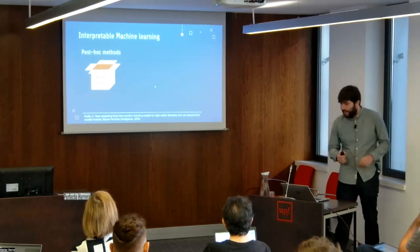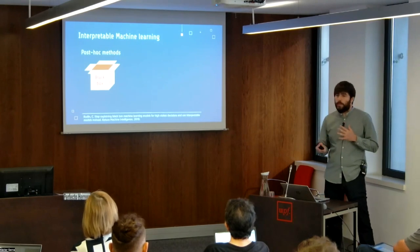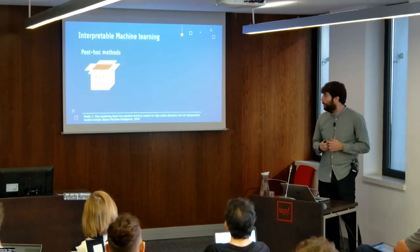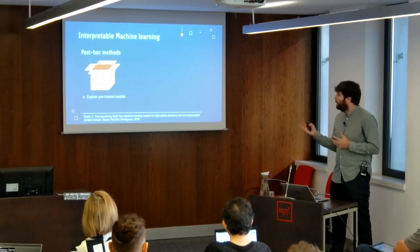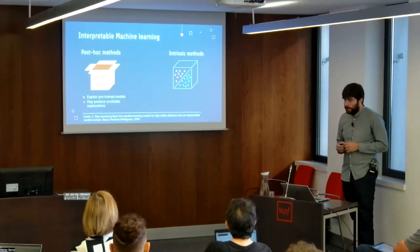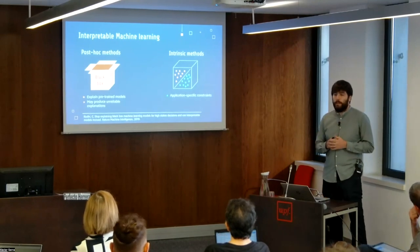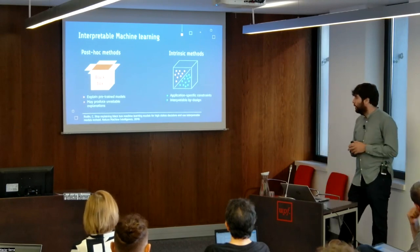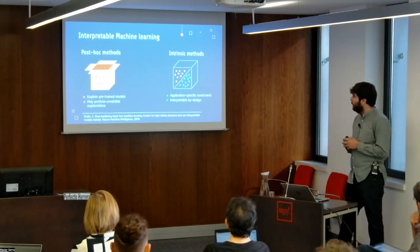Most interpretable methods are focused on explaining how the data is processed or represented by the network. This is known as a post-hoc explanation, as it tends to explain a pre-trained or black box model. But we will show that these methods may produce unreliable explanations. On the other hand, by adding application-specific constraints, one can strive for rendering some form of interpretability while being as accurate as a black box model — these are the reasons why we adopted this approach during this thesis.